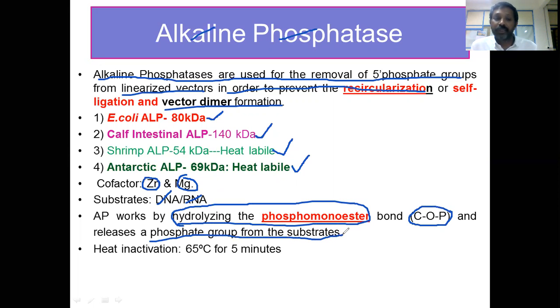For heat inactivation, the dephosphorylation reaction can be inhibited by keeping the reaction at 65 degrees Celsius for five minutes.